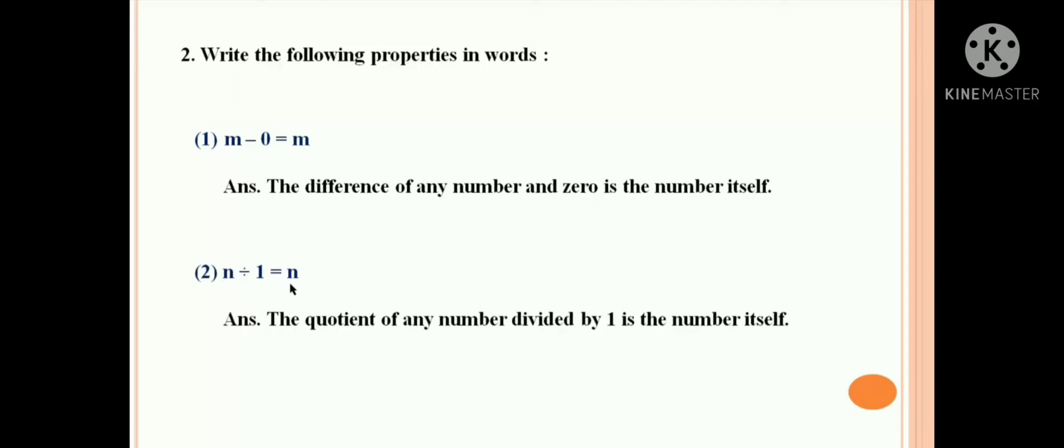The second question is: N divided by 1 is equal to N. So your answer is, the quotient of any number divided by 1 is the number itself.